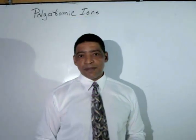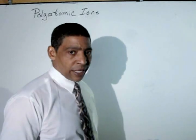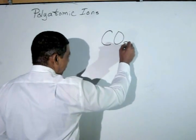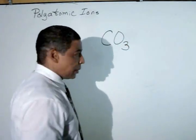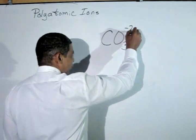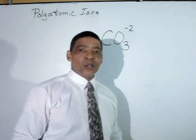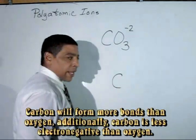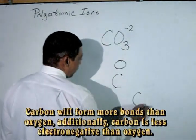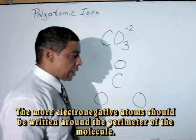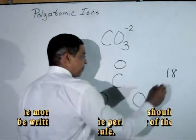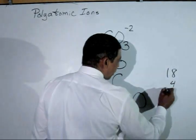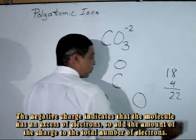Another common polyatomic ion is carbonate. The formula for the carbonate polyatomic ion is CO3 with a negative two charge. When writing the Lewis structure for the carbonate polyatomic ion, carbon is the central atom surrounded by three oxygens. Oxygen will contribute six valence electrons, for a total of eighteen, and carbon possesses four valence electrons. Eighteen plus four is twenty-two electrons.